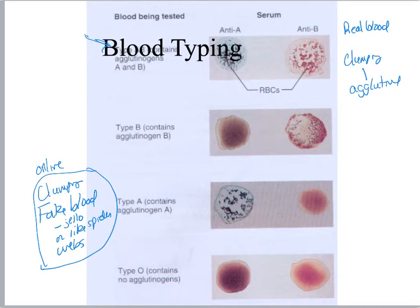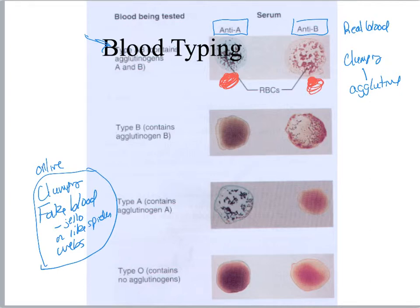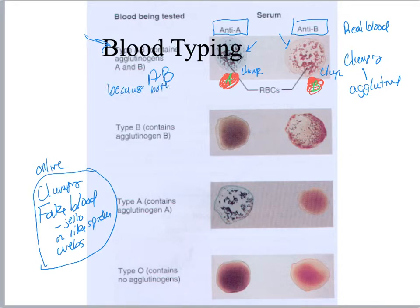I've got my slide with a column for anti-A and a column for anti-B. They put a drop of blood in each, then a drop of anti-A serum here and a drop of anti-B serum here. You will notice that both clumped — the anti-A serum bound to A antigens and the anti-B serum bound to B antigens. That means this is type AB blood because both clumped.